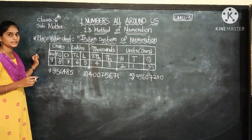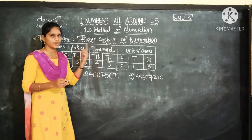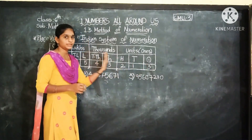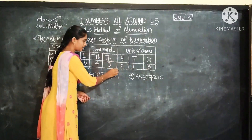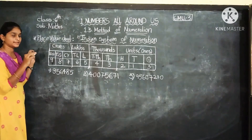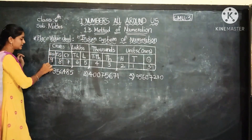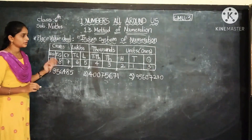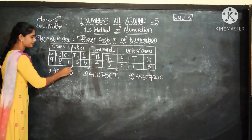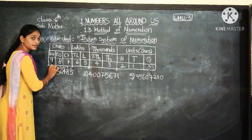The third comma we put again after two digits, which is the Lakhs period. Then after three more places, that is the Crores period. So the comma pattern in the Indian system from the right is: first three digits, then groups of two digits.